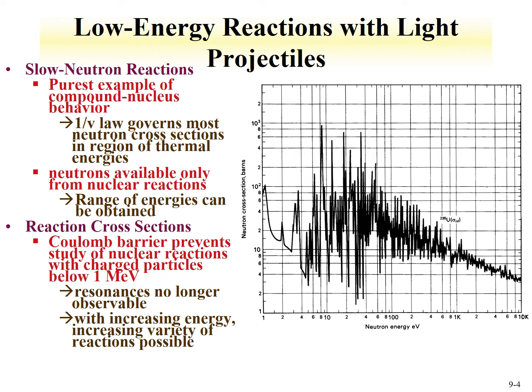Neutrons available for these reactions can only come from nuclear reactions, so a range of neutron energies can be obtained since these neutrons are being produced fundamentally in the fission of a nucleus. The reaction cross-sections generally start high and go low, but there are resonance peaks throughout the energy regime examined — in this case, for the fission of uranium-235 by thermal neutrons.